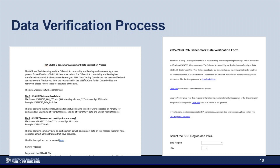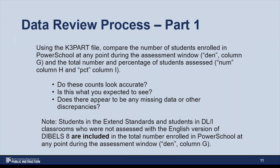Next, I will review the data verification process. Before you begin your review of the data, we recommend that you download a copy of the RTA DIBLS-8 Benchmark Assessment Data Verification Process document, which was attached to the notification email you received. We also suggest that you download the PDF version of the 2022-2023 RTA Benchmark Data Review Form to use as a guide while you complete the process. There is a link to this form in the RTA DIBLS-8 Benchmark Assessment Data Verification Process document. Once you have downloaded the 22-23 RTA Benchmark Data Review questions and the review process, you are ready to review the K3 part file.